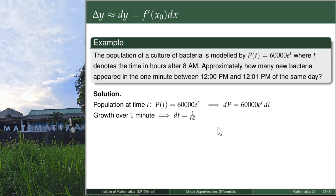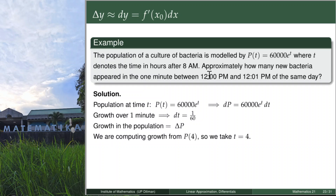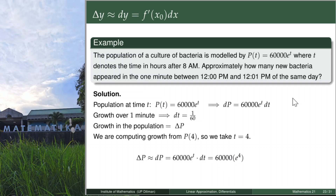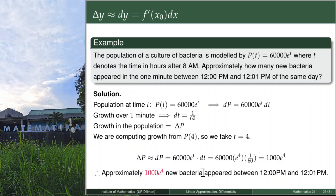The growth in population is the population at 12.01 minus the population at 12 p.m., which is delta P. Computing from T = 4 and dt = 1/60, delta P is approximately dP = 60000 e^T · dt. Plugging in T = 4 and dt = 1/60, we get 1000 e^4 — the approximate number of new bacteria that appeared between 12 and 12.01 p.m.